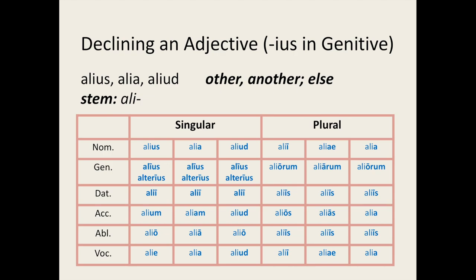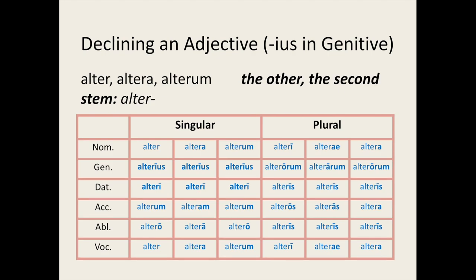There is one other group of first and second declension adjectives which behave irregularly. These are the first and second declension adjectives whose genitive singular ends in -ius. Alius is an example of this group. We form the stem in the exact same way, but notice how it follows a very different pattern from multus and suus, particularly in the genitive and dative singular forms. The genitive singular form ends in -ius for both masculine, feminine, and neuter, and the dative singular form ends in a long -i. Here is another example of this group: alter, which means 'the other' or 'the second.' Notice the -ius ending for all three genders in the genitive singular and the long -i ending in the dative singular.